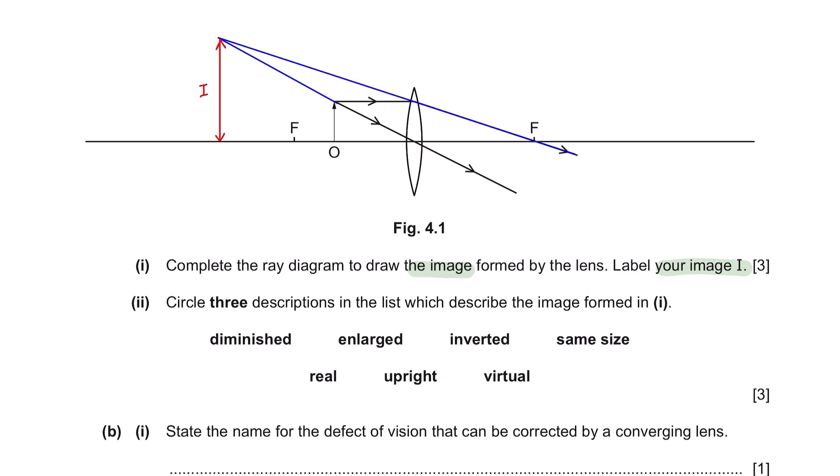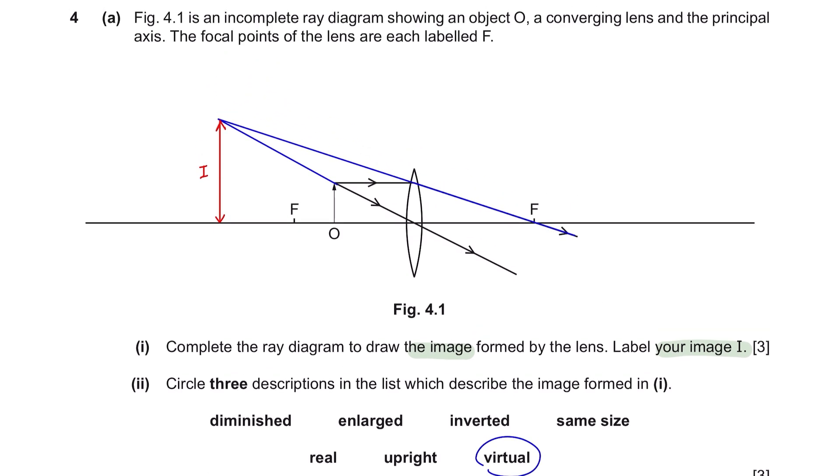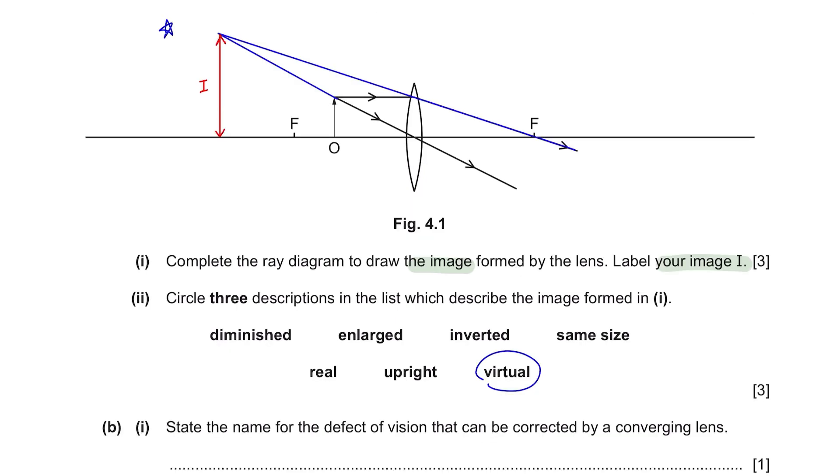Question 2. Circle 3 descriptions in the list which describes the image formed in 1. In this case, the image is virtual because the light appears to meet when produced backwards over here. It is also magnified in another word enlarged. As you can see, it is bigger than the object. And the last description is this is upright since the image is formed on the same side of the principal axis.